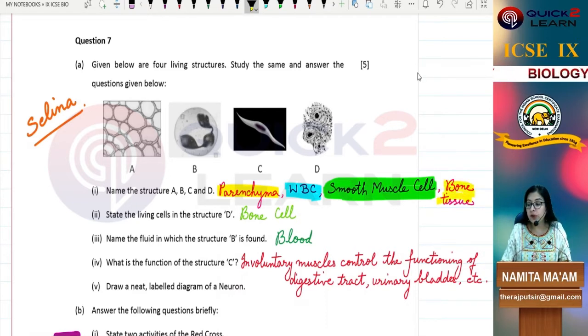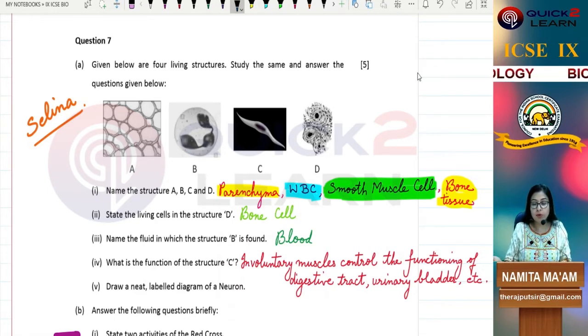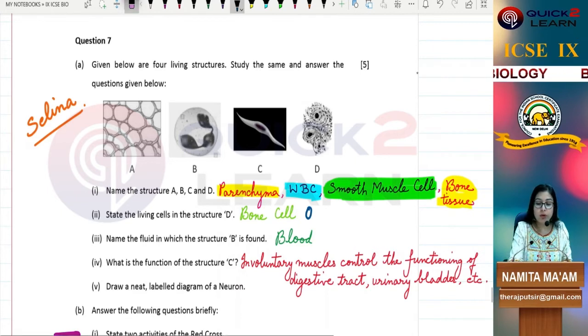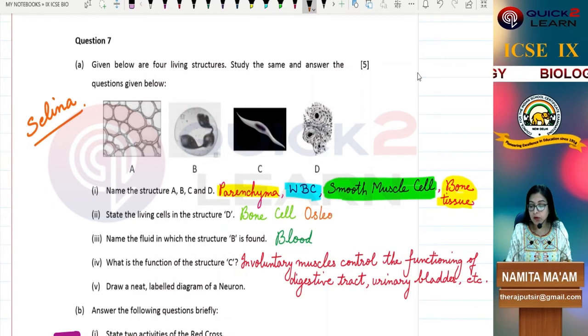What are bone cells called? Let us know: State the living cells in the structure D. In structure D, the living cells, the bone cells, we call them osteocytes. Osteocyte means bone cells. Name the fluid in which the structure B is found. B which is WBC is present in which fluid? Blood.